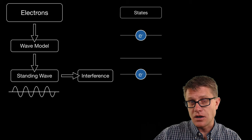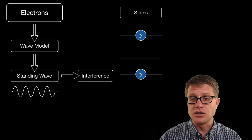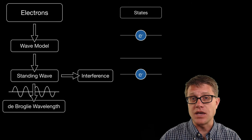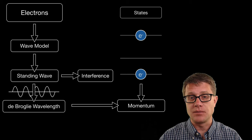And so standing waves occur when the waves are interfering with themselves. And so the de Broglie wavelength showed us what that wavelength is. And then we could use that to calculate the momentum and even figure out what is the size of the atom itself.